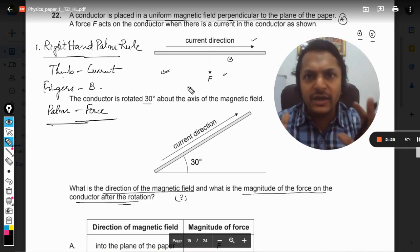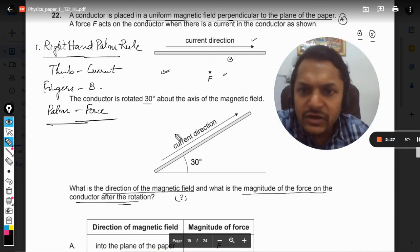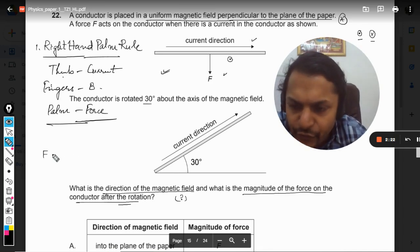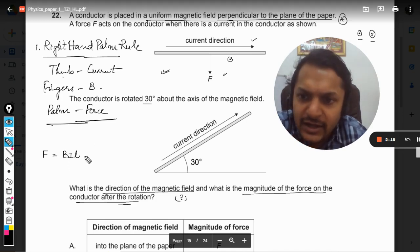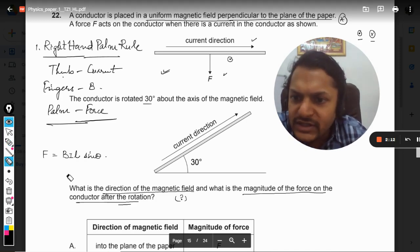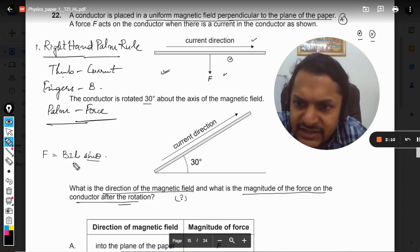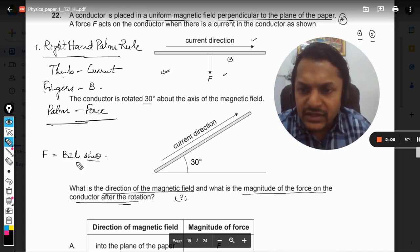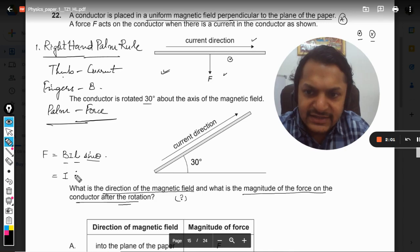Now what about the magnitude of the force? The magnitude of the force is given by the formula B into I into L, and there is a sine theta also. So don't get confused. What is this theta now? This theta is the angle between the L vector and the B vector.